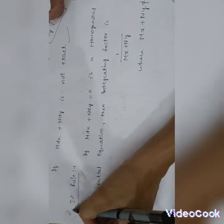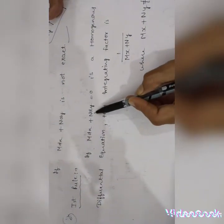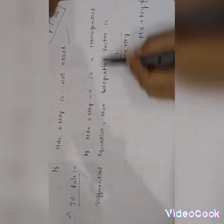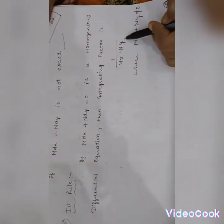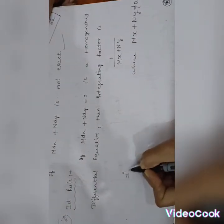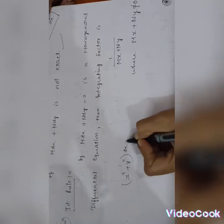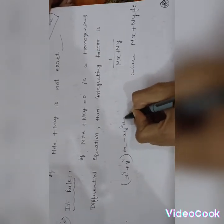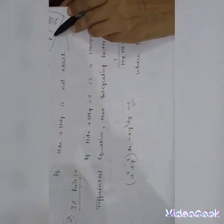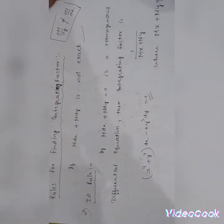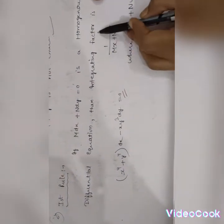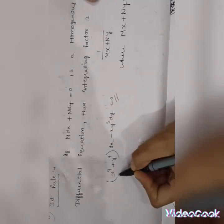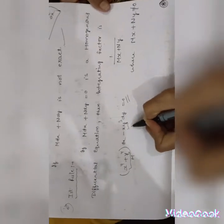First rule: if M dx plus N dy = 0 is a homogeneous differential equation, then the integrating factor is 1/(Mx + Ny). Consider the example: (x⁴ + y⁴) dx minus (x·y³) dy = 0. First compute ∂M/∂y and ∂N/∂x to check — they are not equal, so it is not an exact differential equation. Since it is homogeneous, the integrating factor is 1/(Mx + Ny).